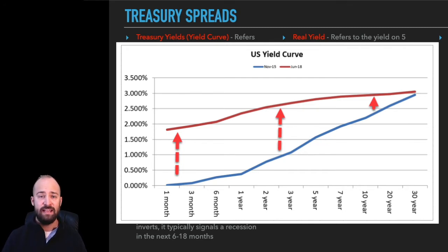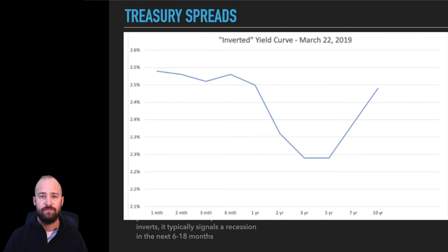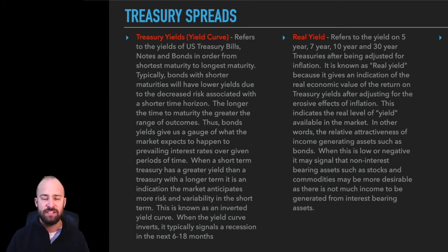A flattening yield curve is the opposite — it refers to times when the short end of the yield curve is increasing relative to the long end, resulting in a flattening. A flattening yield curve typically indicates expectations for economic weakness, low inflation, and lower interest rates moving forward. Occasionally this goes to an extreme where shorter-term yields actually exceed longer-term yields — this is known as an inverted yield curve. More often than not, when the yield curve inverts it's a warning sign of an impending recession, usually within the next six to eighteen months.